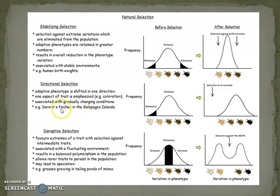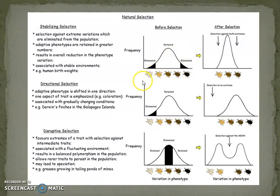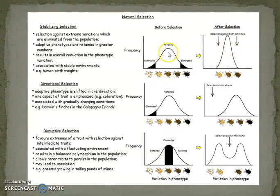Now, stabilizing natural selection, also known as centripetal natural selection. In the graph, before selection there is a broader distribution, and after selection the extremes are eliminated while the intermediate is retained. Elimination of lower and higher grades occurs, and the intermediate phenotype number increases. Variation decreases — the variance portion definitely decreases — while the mean increases. It may be qualitative or quantitative.